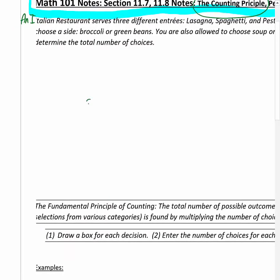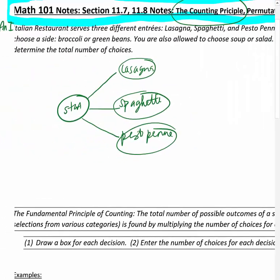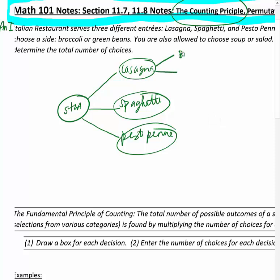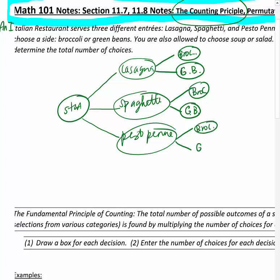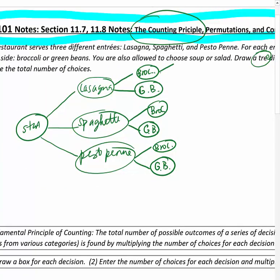We've seen this before. The first choice is entree: lasagna, spaghetti, and pesto penne. For each of those, you can choose a side - broccoli or green beans. So for lasagna, there's broccoli or green beans; for spaghetti, broccoli or green beans; and for pesto penne, broccoli or green beans. Once you choose the side, you can choose a soup or salad. So from each of those branches, I can choose soup or salad.